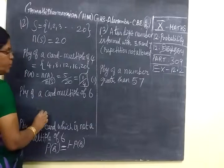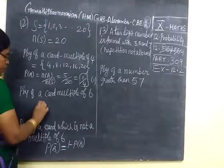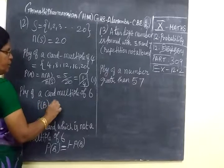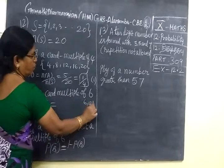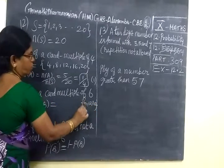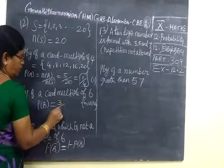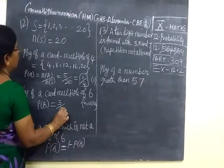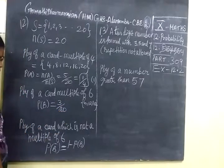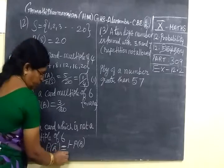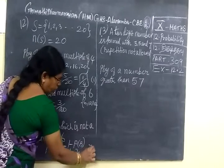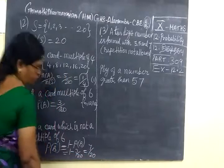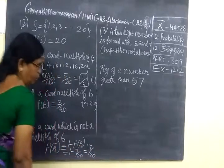So probability of a card multiple of 6, P(A) equals multiples of 6 which are 6, 12, 18. So total is 3. So 3 by total number 20. So not multiple of 6 is 1 minus 3 by 20 equals 17 by 20.